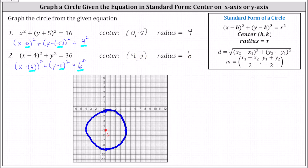To graph the circle, we plot the center, four, comma, zero, which is this point on the x-axis. And then from here, because the radius is six, we'll go right six, left six, up six, and down six from the center to find four points on the circle. And now we graph a circle passing through the four points.